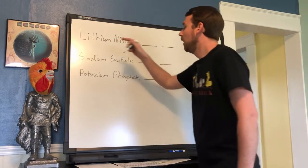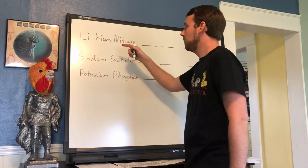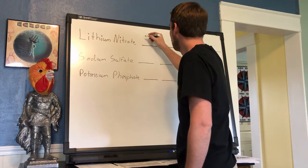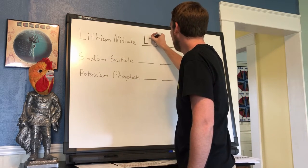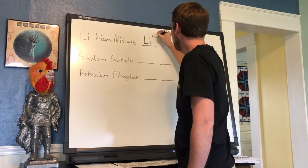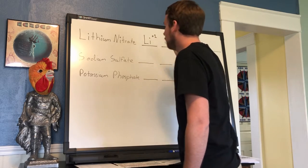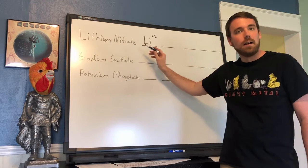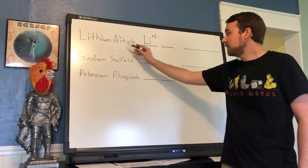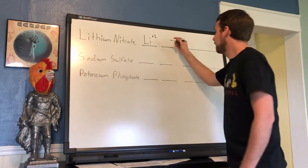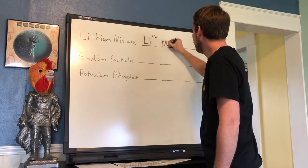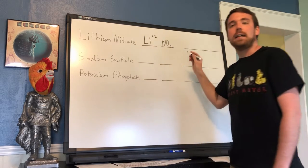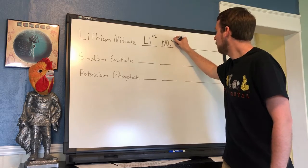Our cation from lithium nitrate is lithium, so we have Li with a charge of plus one. Our anion is nitrate. Nitrate has a formula of NO3 and it has a charge of minus one.